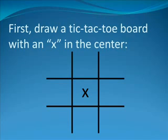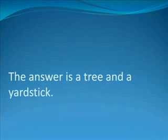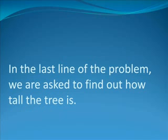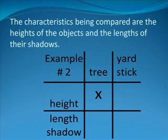First, draw a tic-tac-toe board with an X in the center, just as we did in the previous example. Next, ask yourself what two objects are being compared. The answer is a tree and a yardstick. In the last line of the problem, we were asked to find out how tall the tree is. Therefore, tree goes at the top of the second column and yardstick goes at the top of the third column.